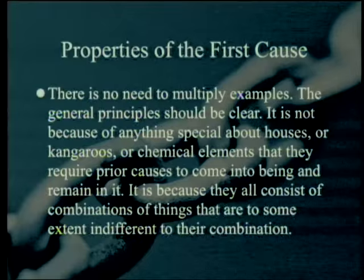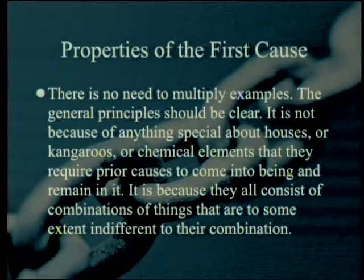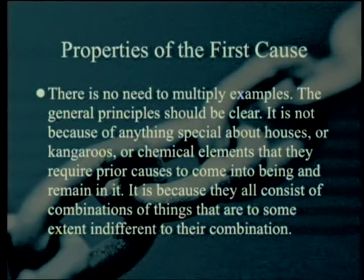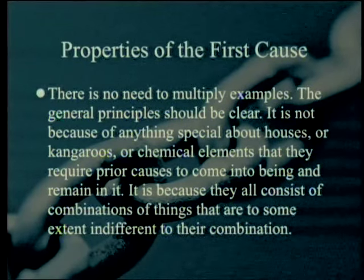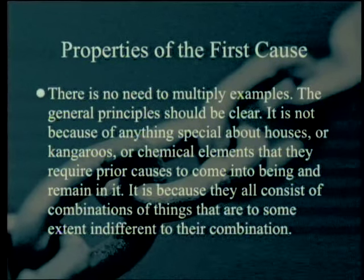There is no need to multiply examples. The general principle should be clear: it is not because of anything special about houses or kangaroos or chemical elements that they require prior causes to come into being and remain in being. It is because they all consist of combinations of things that are, to some extent, indifferent to their combination. And therefore, the first cause cannot be a combination of anything.